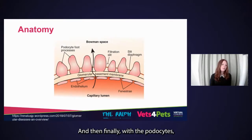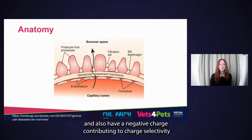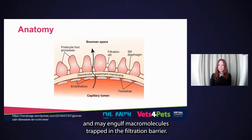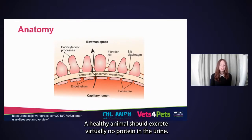Finally, with the podocytes: these synthesize the glomerular basement membrane and also have a negative charge contributing to charge selectivity. The podocytes are also phagocytic and may engulf macromolecules trapped in the filtration barrier. A healthy animal should excrete virtually no protein in the urine.